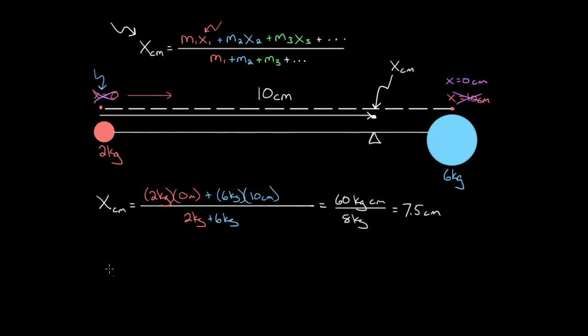What are we gonna get then? We'll get that the location of the center of mass for this calculation is gonna be, well, we'll have two kilograms, but now the location of the two kilogram mass is not zero. It's gonna be, if this is zero and we're considering this way as positive, it's gonna be negative 10 centimeters, because it's 10 centimeters to the left. So this is gonna be negative 10 centimeters.